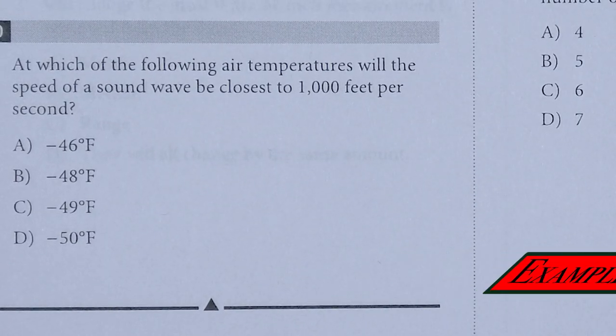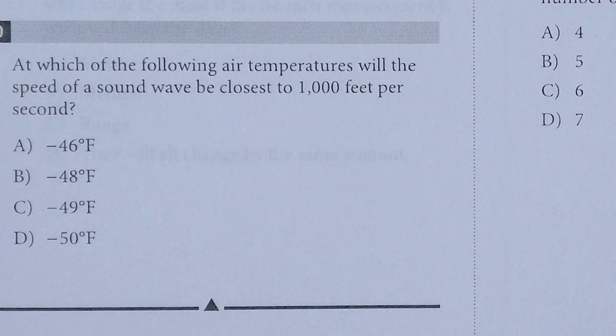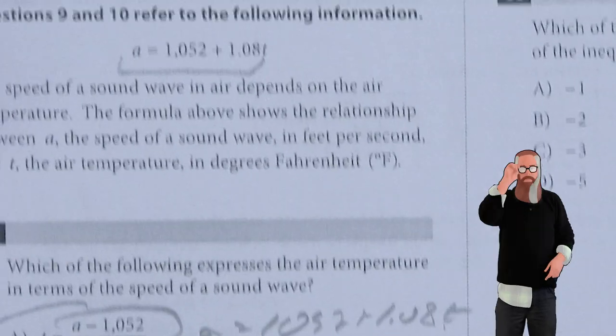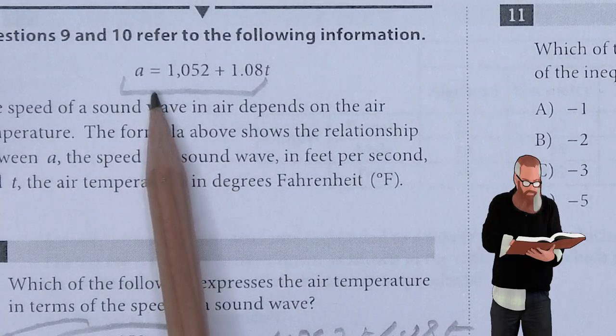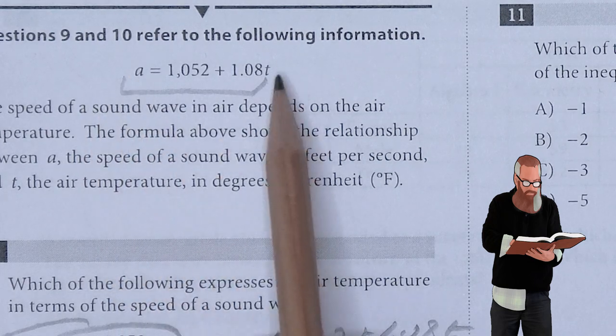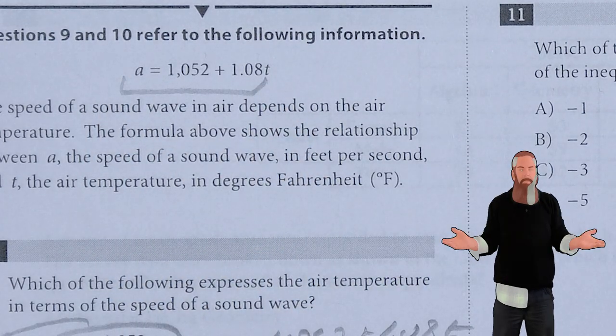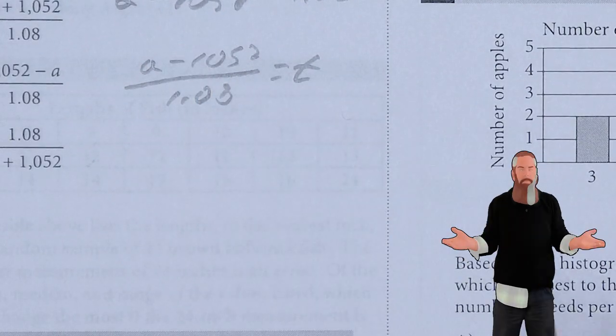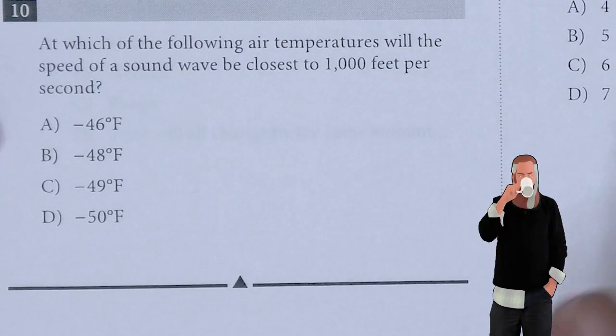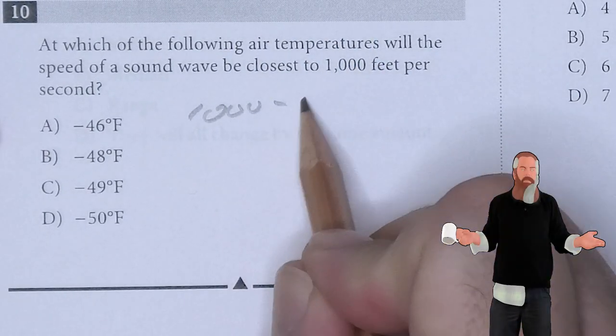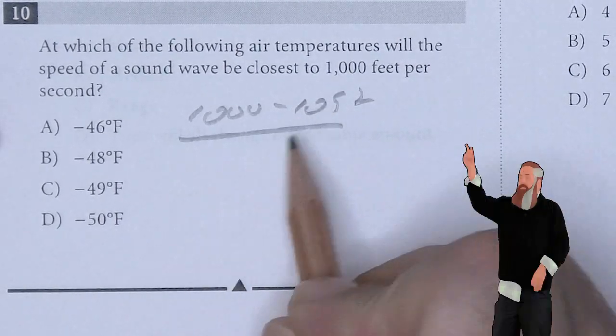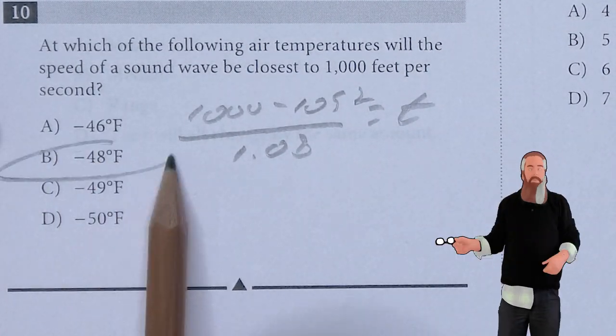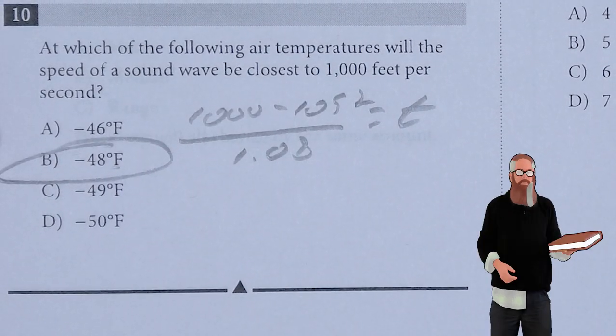At which of the following air temperatures will the speed of sound wave be closest to 1000 feet per second? We can use this equation by putting 1000 in for a and figuring out what T is. If we had done number nine correctly, then we have a minus 1052 divided by 1.08 is equal to T. You put it into your calculator and get negative 0.48 degrees Fahrenheit.